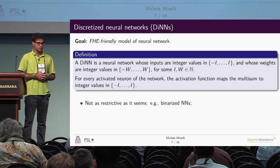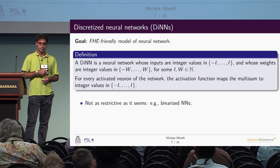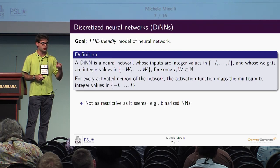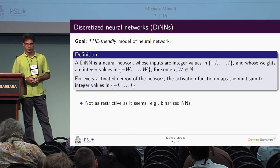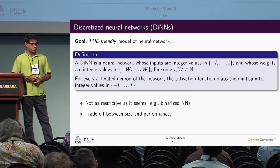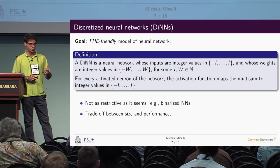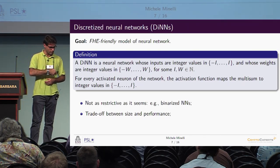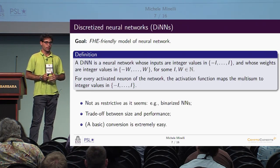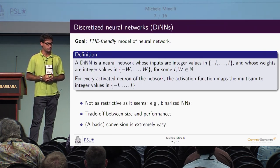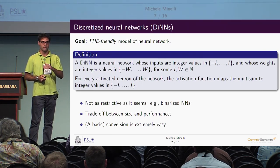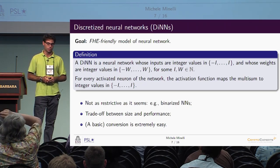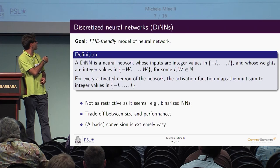This model is not as restrictive as it might seem. It has already been done in a more restrictive fashion with binarized neural networks, where inputs, weights, and activations are all binary, and it has been shown to work well. Of course, there is a trade-off between size and performance — discretized networks become bigger to maintain the same level of accuracy. A basic conversion from a generic neural network over the reals to a discretized neural network is extremely easy: we can just chop off the decimal part.